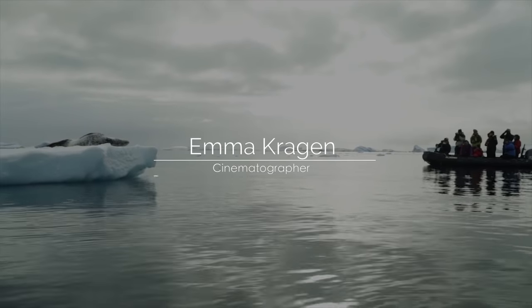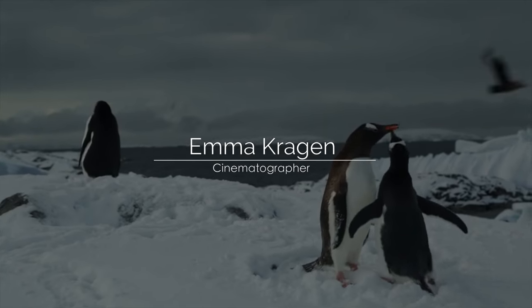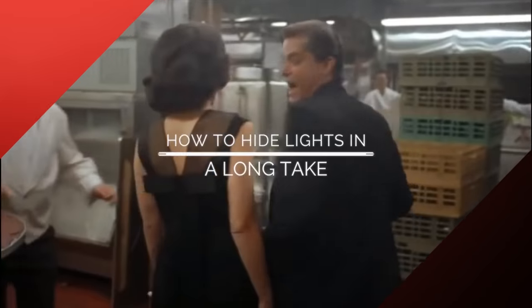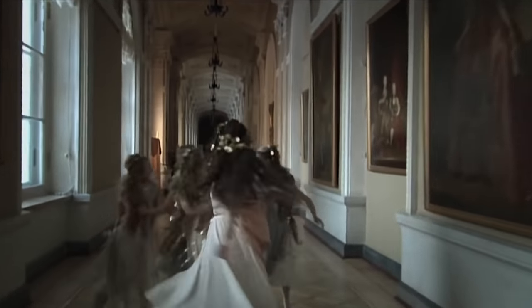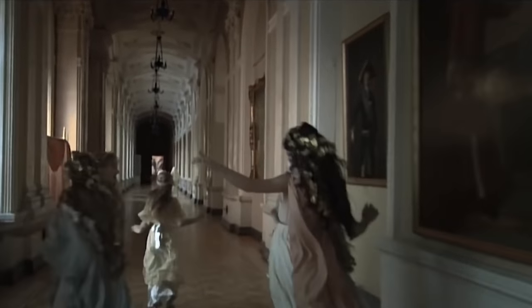Emma Cregan is a DP that just came back from Antarctica from shooting a documentary. She shot commercials with Bob Saget and Lyft, and today she's here to talk to us about six different methods for hiding lights when lighting the one-er. This is something that you guys want to hear from us.